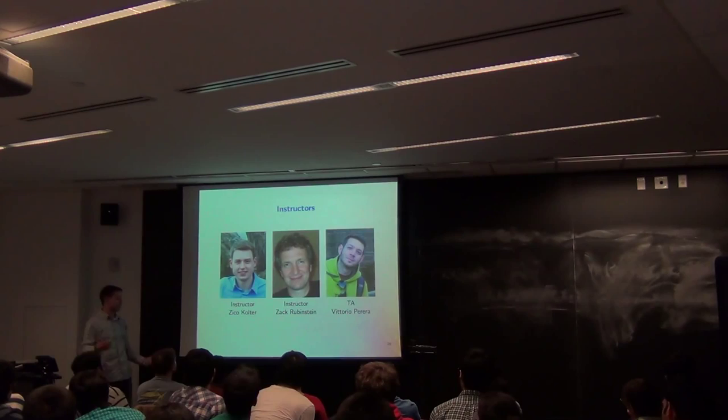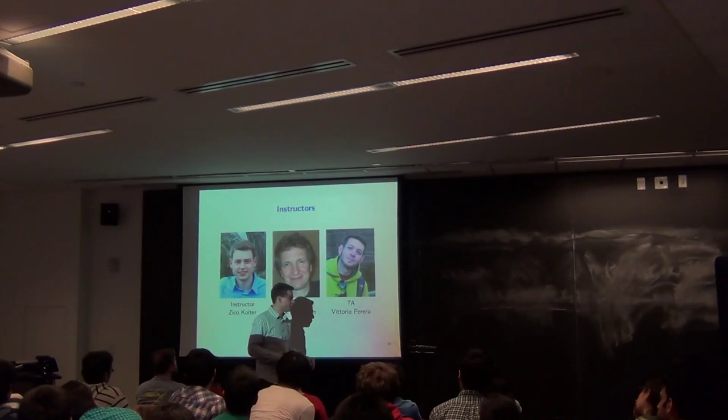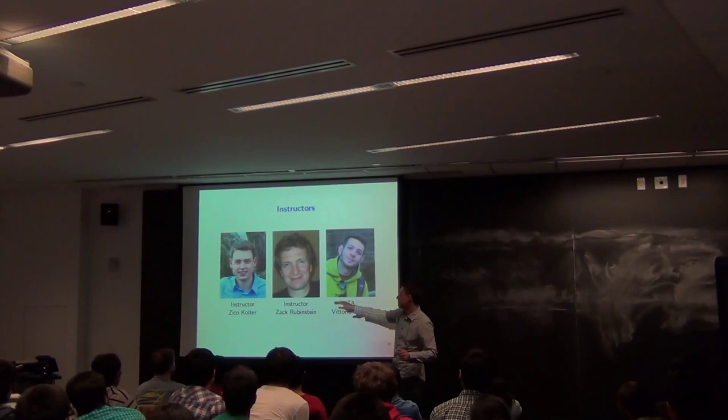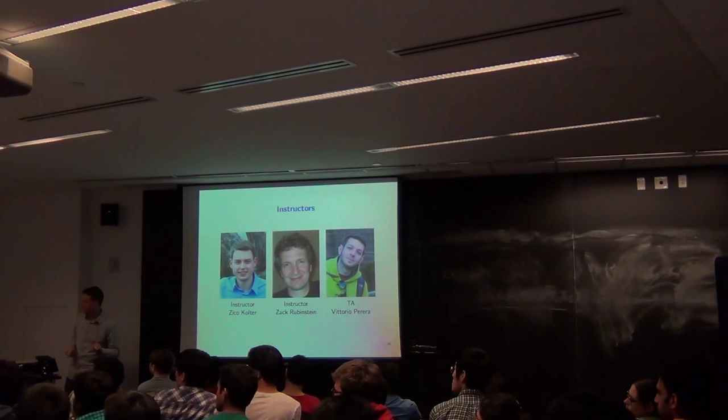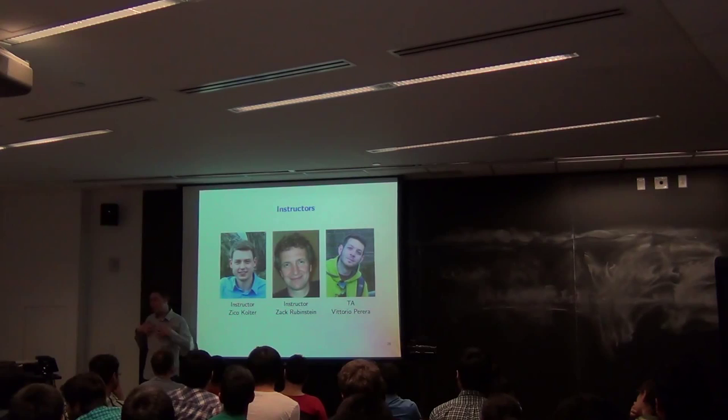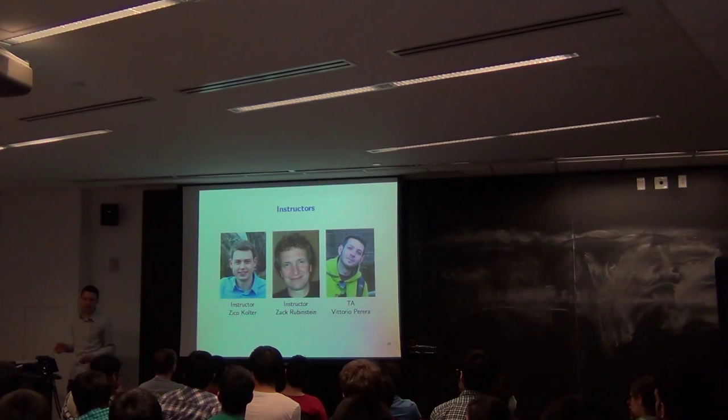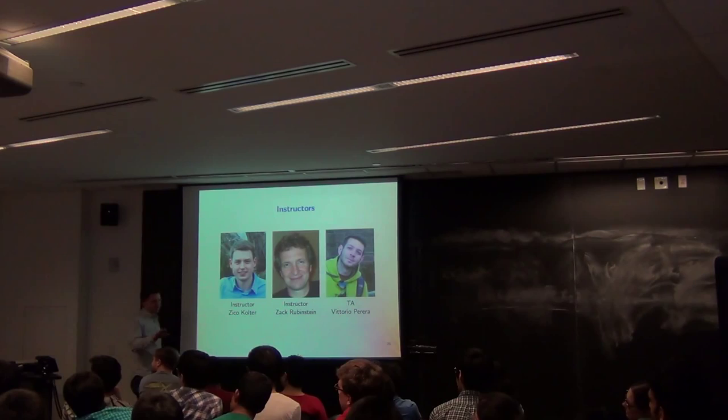I also realized I never introduced myself. I'm Zico Coulter, one of the two instructors of this course. The other is Zach Rubinstein, and the TA is Vittorio Pereira. We will each have office hours. Zach and I will have office hours directly after class — today after class I'll have my office hours. If office hours are separate, people often don't come. My office is in Gates on the seventh floor. You can call me Professor Zico, Professor Coulter — it doesn't matter, just be respectful.